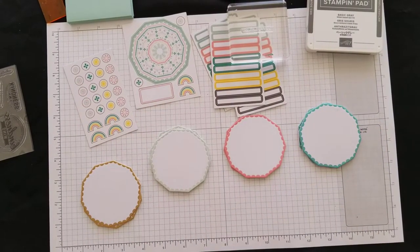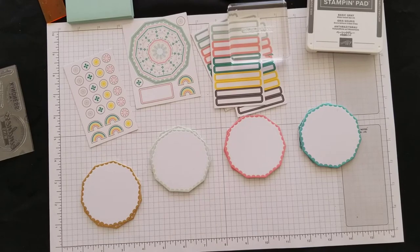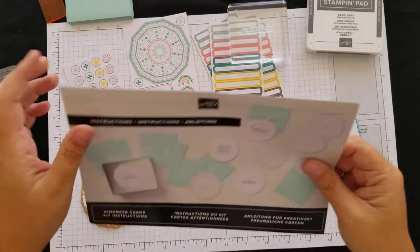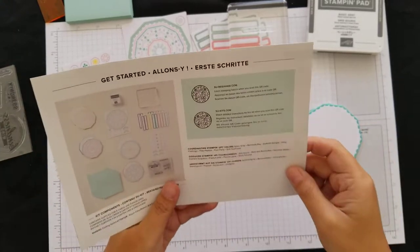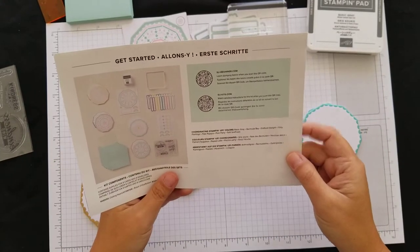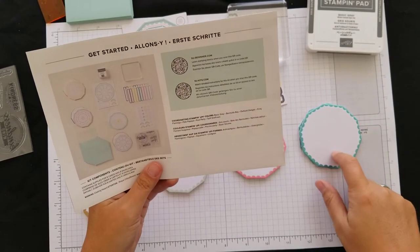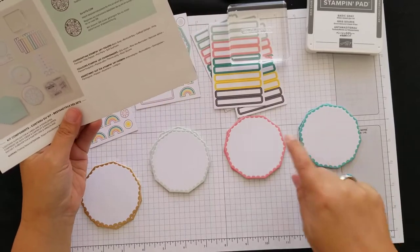So let's see what colors are these. Coordinating colors: Basic Gray obviously, Bermuda Bay, Daffodil Delight.